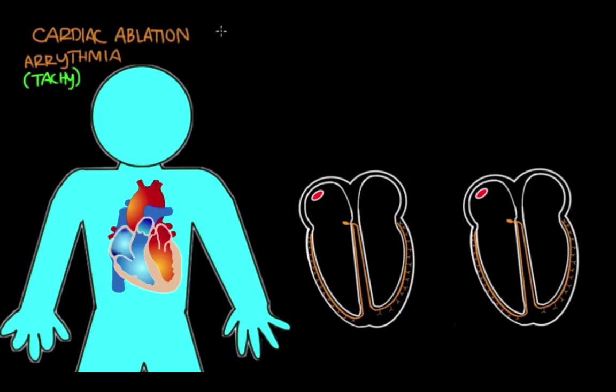In cardiac ablation, diseased heart tissue known to cause an arrhythmia is found and then destroyed. By destroying this problem area that starts arrhythmias, you're hoping to prevent future arrhythmias.